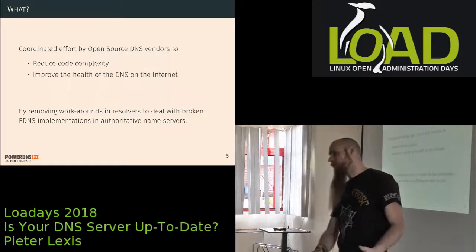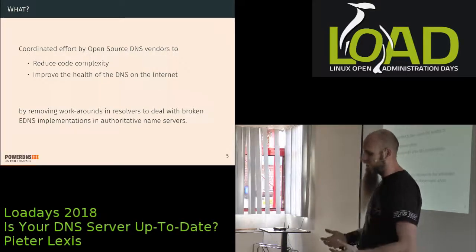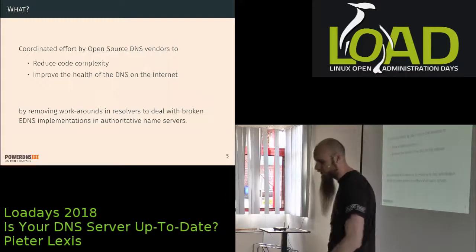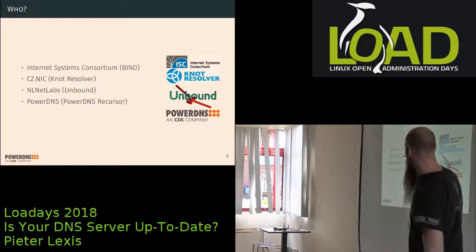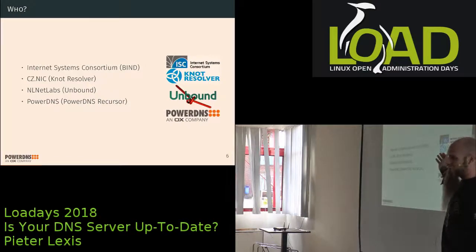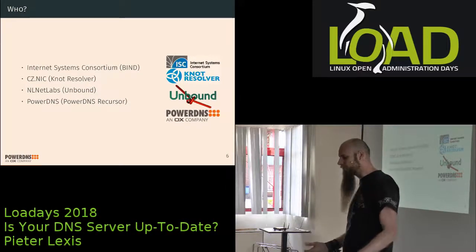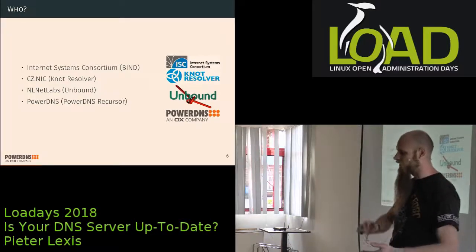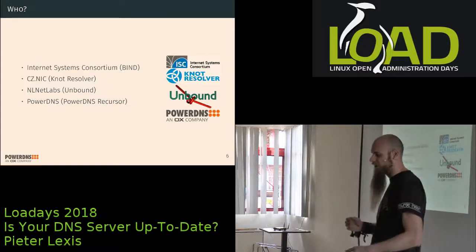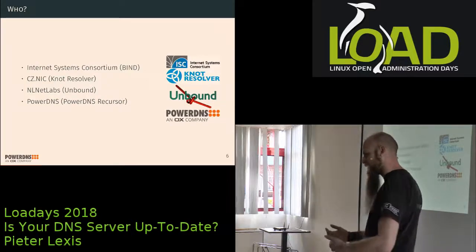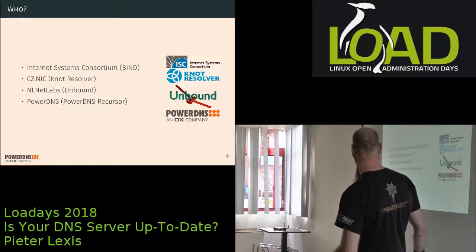The first step we're going to do is remove EDNS-related workarounds from name servers. Who is doing all this? It's the guys from ISC who make the BIND name server, CZ.NIC who make the Knot resolver and Knot name server, the NLnet Labs guys who make Unbound and NSD, and then there's us — we make the PowerDNS Recursor and the PowerDNS Authoritative Server.